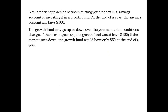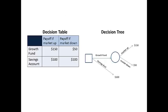Here is an example. You are trying to decide between putting your money in a savings account or investing it in a growth fund. At the end of a year, the savings account will have $100. The growth fund may go up or down over the year as market conditions change. If the market goes up, the growth fund would have $150. If the market goes down, the growth fund would have only $50 at the end of a year. The growth fund is uncertain. This example can be presented as a decision table or as a decision tree.